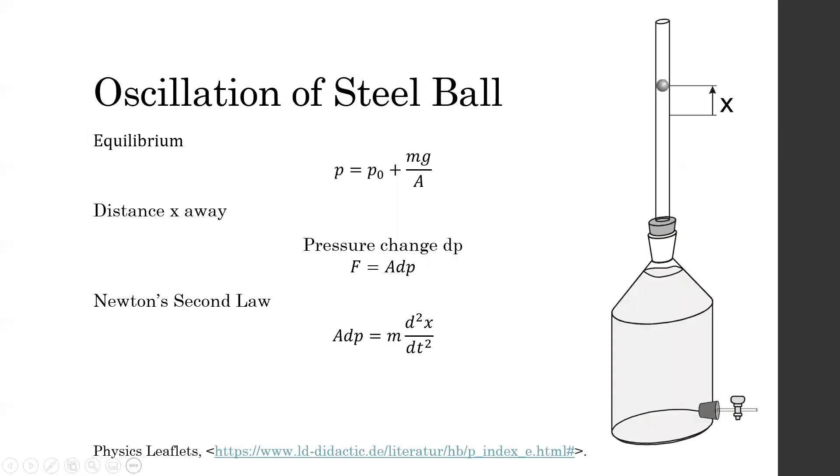We can set a steel ball in motion in a precision glass tube atop a Mariotte's flask, where it will oscillate on top of a cushion of air. When the ball is in equilibrium, the total pressure of the cushion of air is equal to the atmospheric pressure plus the pressure due to the weight of the ball. When the ball moves a distance x away from equilibrium, the pressure changes by dp, leading to a force exerted on the ball equal to the area of the precision tube times dp.